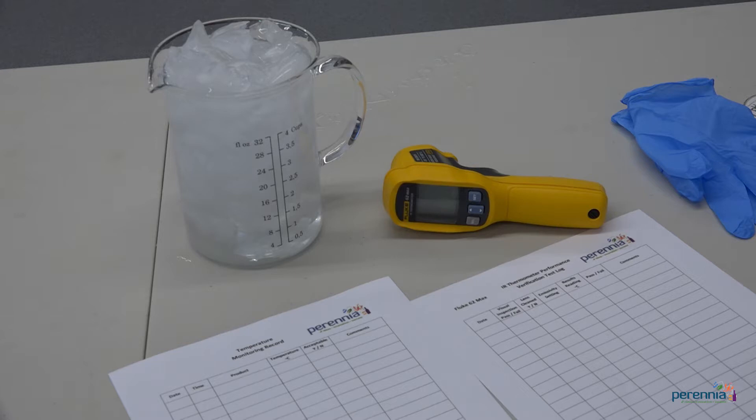Infrared thermometers can very quickly and accurately determine the temperature of a surface from a distance by measuring the infrared energy radiated from a specific surface or object.